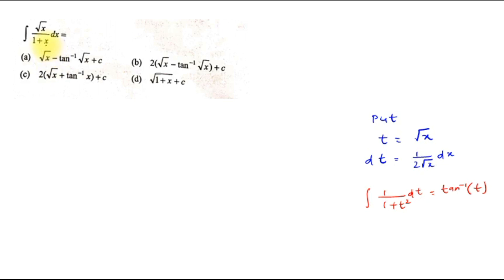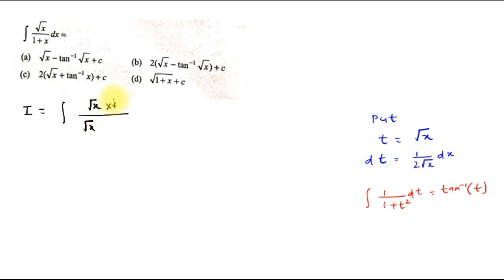Hello dear student, this is your question. The question is the integration of √x divided by (1 + x) dx. If we look at it closely, if we differentiate √x we get 1/(2√x). So if we put t equal to √x, then dt equals (1/(2√x)) dx. We write I as the integral of √x over (1 + x) dx, multiplying and dividing by √x to prepare for the substitution, giving 2x dx in the adjusted form.